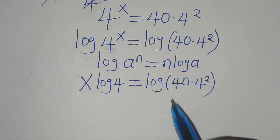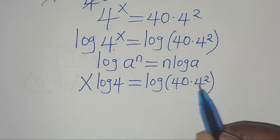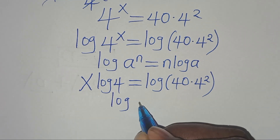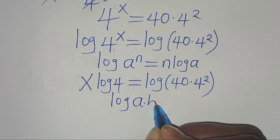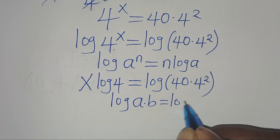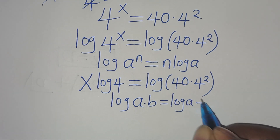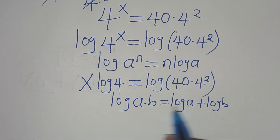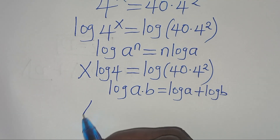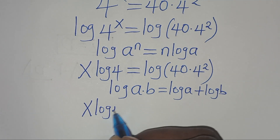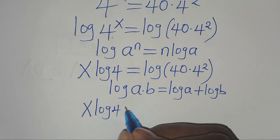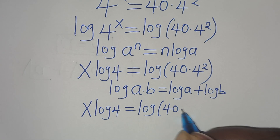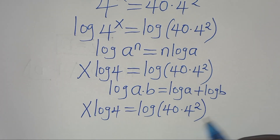The next step is that log(40 × 4^2) is in the form log(a × b), which we can express as log(a) plus log(b). Applying this logarithm property, we have x·log(4) equal to log(40) plus log(4^2).